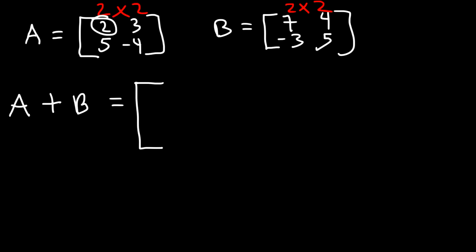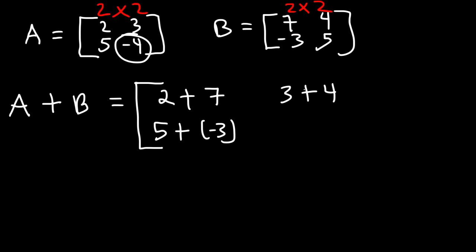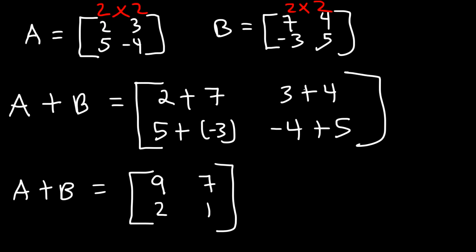The element in the first row, first column of A is added to element B₁₁: that's 2 plus 7. First row, second column: 3 plus 4. Then 5 plus negative 3. And second row, second column: negative 4 plus 5. So 2 plus 7 is 9, 3 plus 4 is 7, 5 plus negative 3 is 2, and negative 4 plus 5 is 1. That's the sum of matrix A and B — a simple way to add two matrices together.